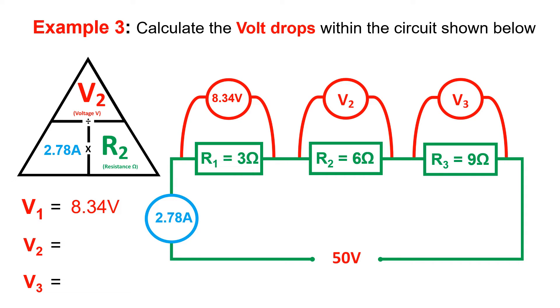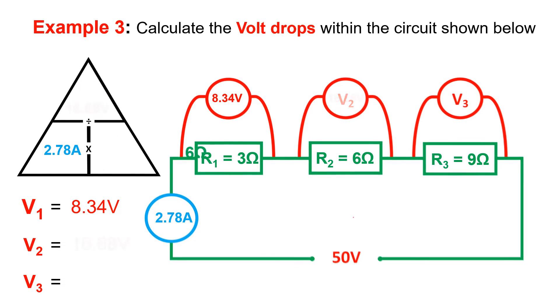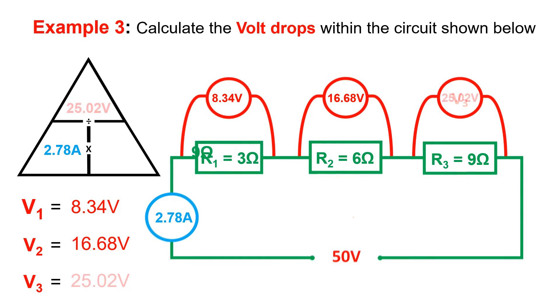We can then do the same for resistance 2 by transferring that value across to our Ohm's law triangle, which gives us a voltage drop of 16.68 volts across resistance 2, and then finally resistance 3, our final voltage drop of 25.02 volts.